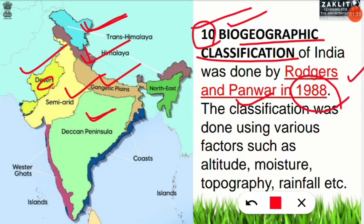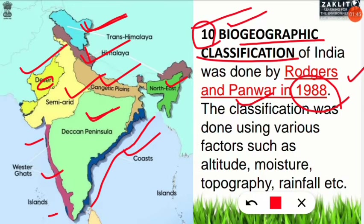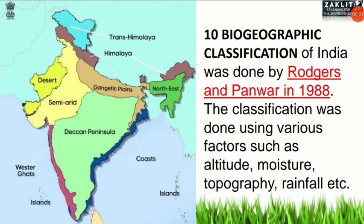The sixth zone is the Deccan Plateau. Next, the seventh is Northeast India. Eighth is the coastal regions of India — this coastal belt includes the Goa and Kerala region. Ninth is the Western Ghats, which is one of the bio-geographical zones. And tenth, islands are also one of the ten categories of bio-geographical zones in India.